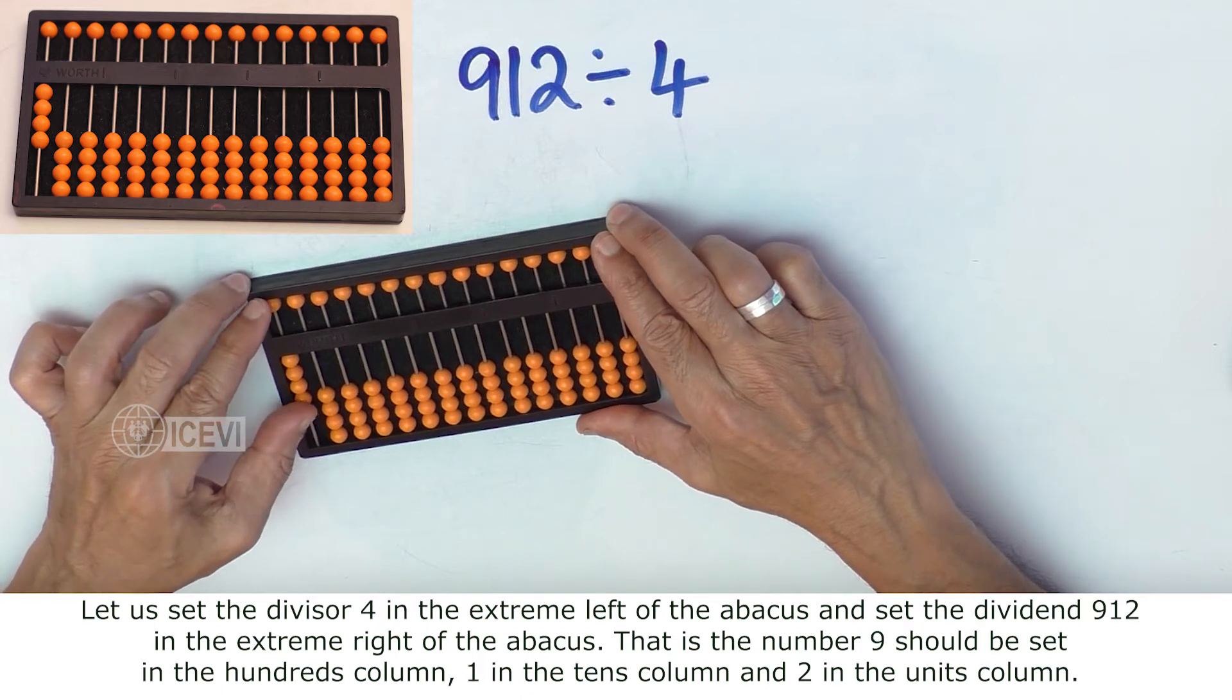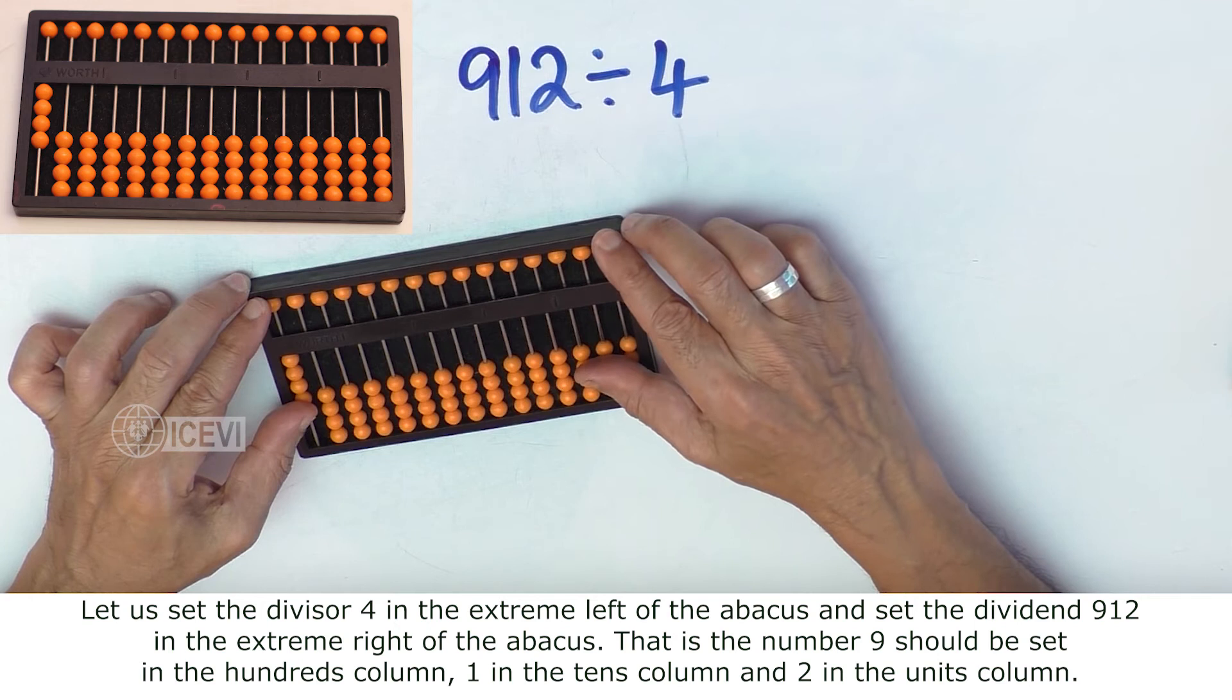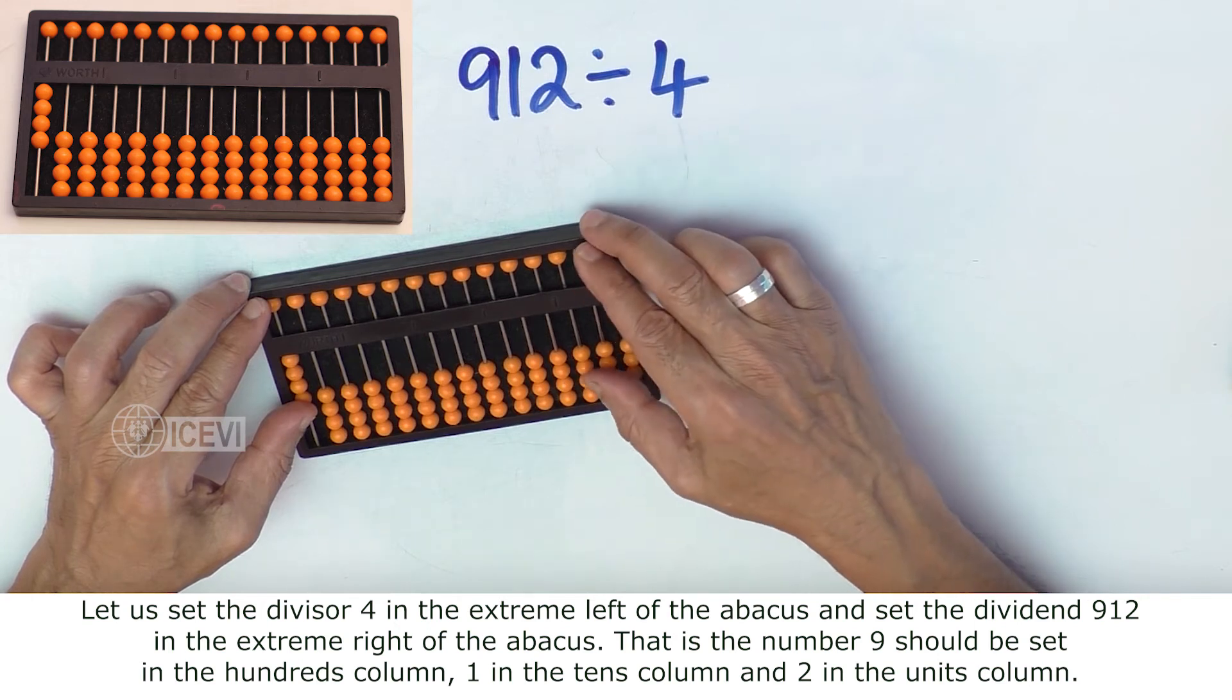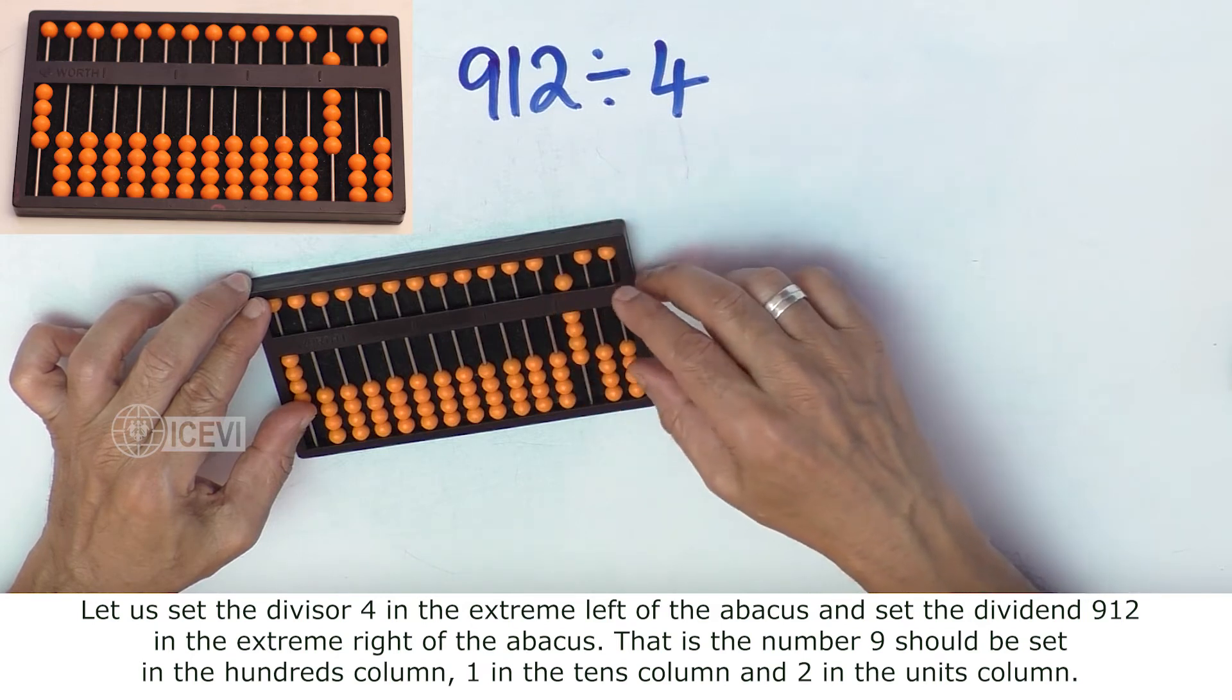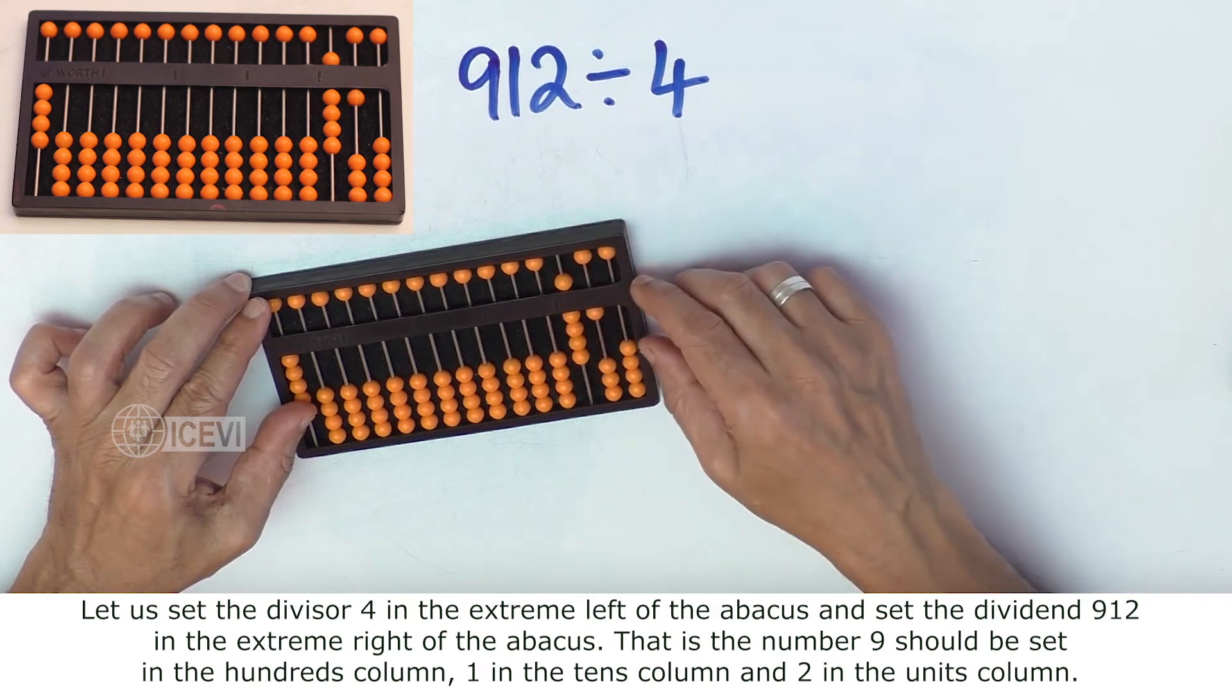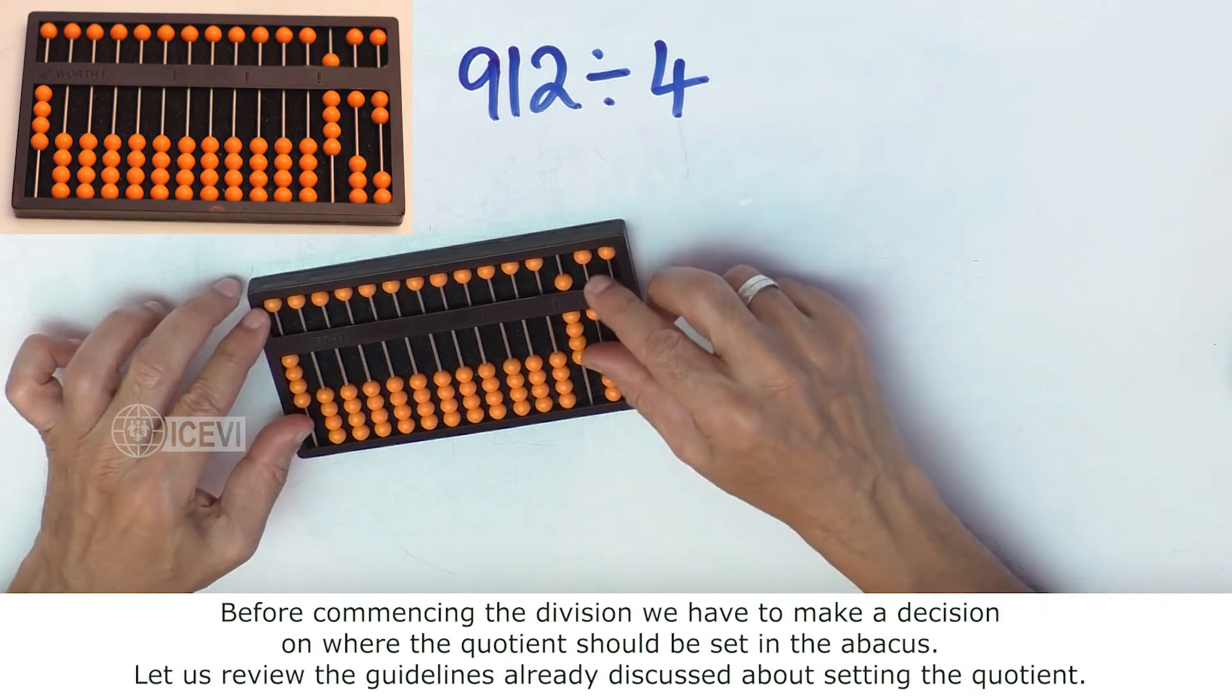Set the dividend 912 in the extreme right of the abacus. That is, 9 should be set in the hundreds column, 1 in the tens column, and 2 in the units column.